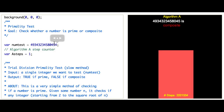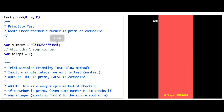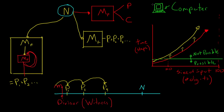Even if we had, say, a thousand computers running for a year, this would simply push that horizontal line up to some other threshold, allowing us to run tests on larger numbers. But as you can see, we would always hit some limit where the input is large enough that we can no longer solve the problems.